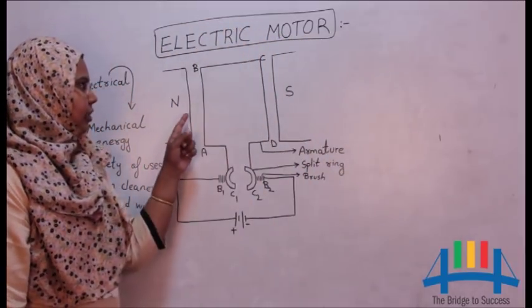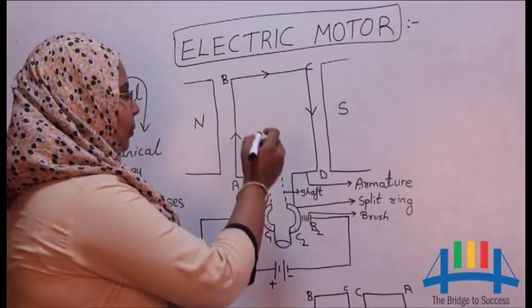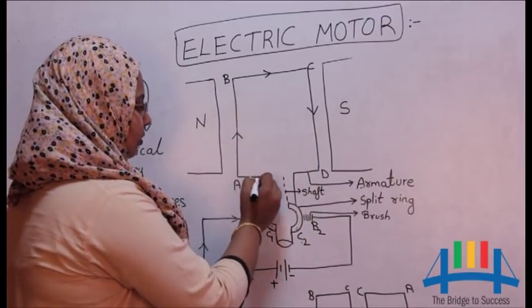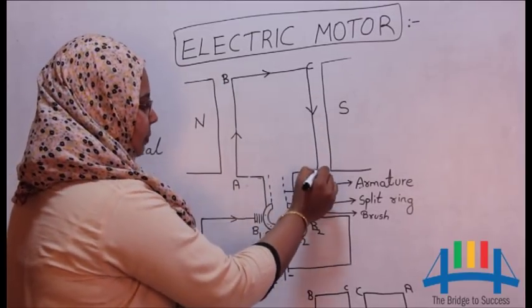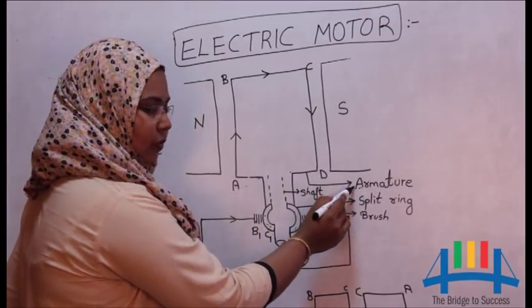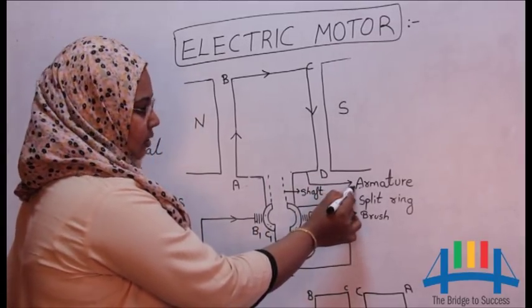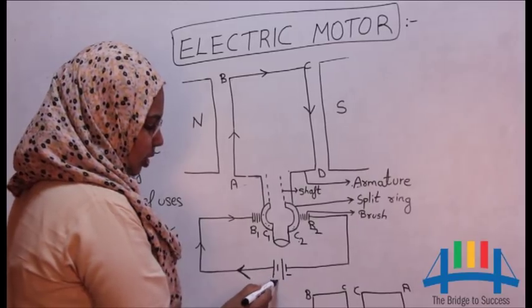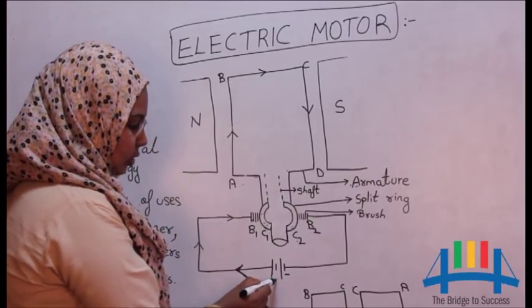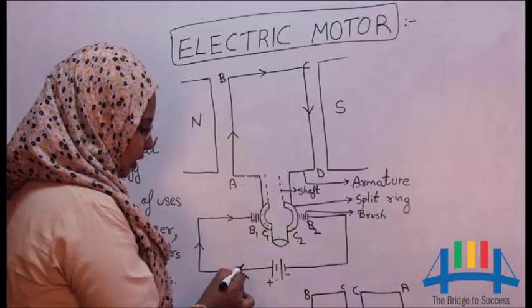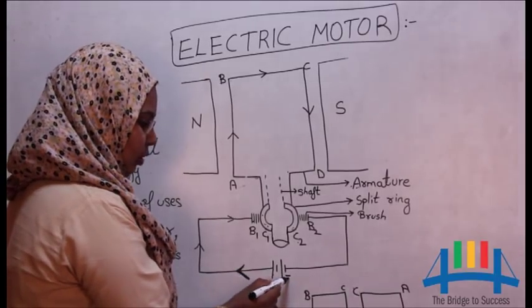Now let us start with the construction of electric motor. Electric motor has an armature which is rectangular in shape. Armature is a soft iron core covered with a copper wiring. It has a source called battery. The direction of current is from positive terminal to the negative terminal of the battery.